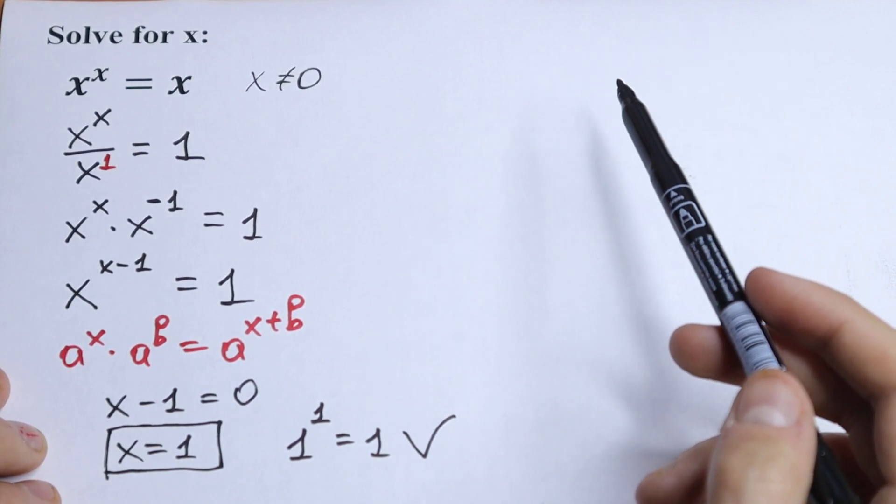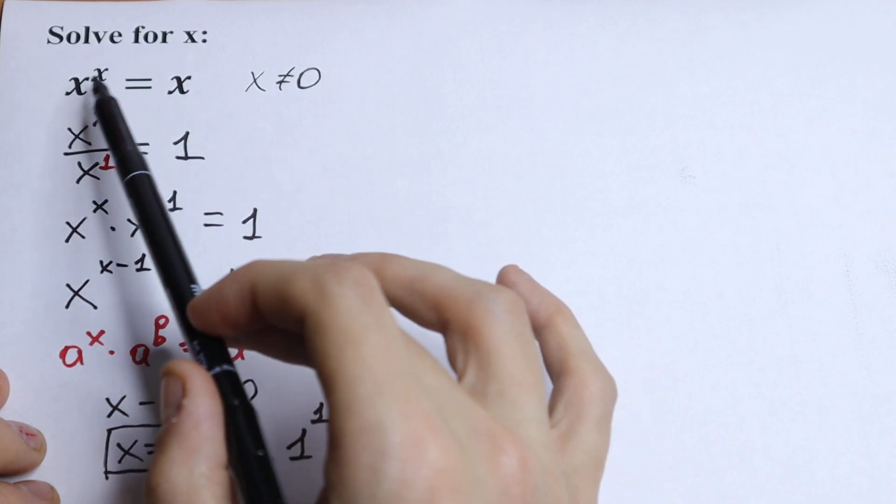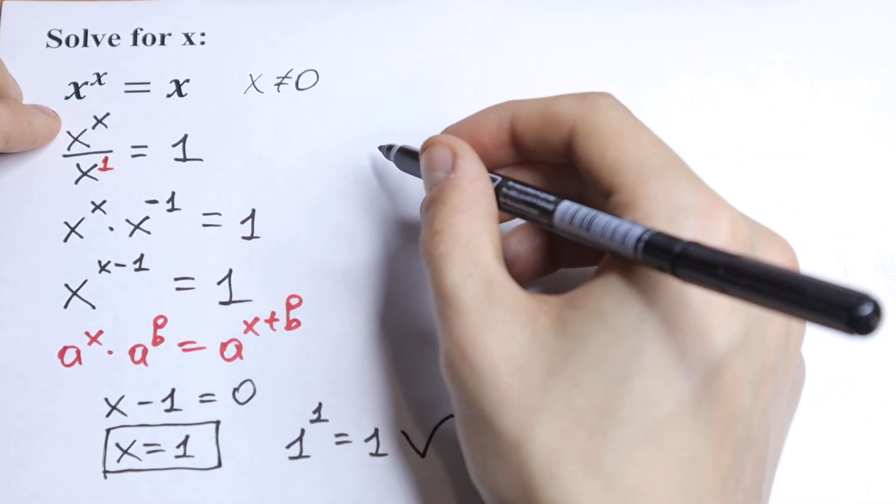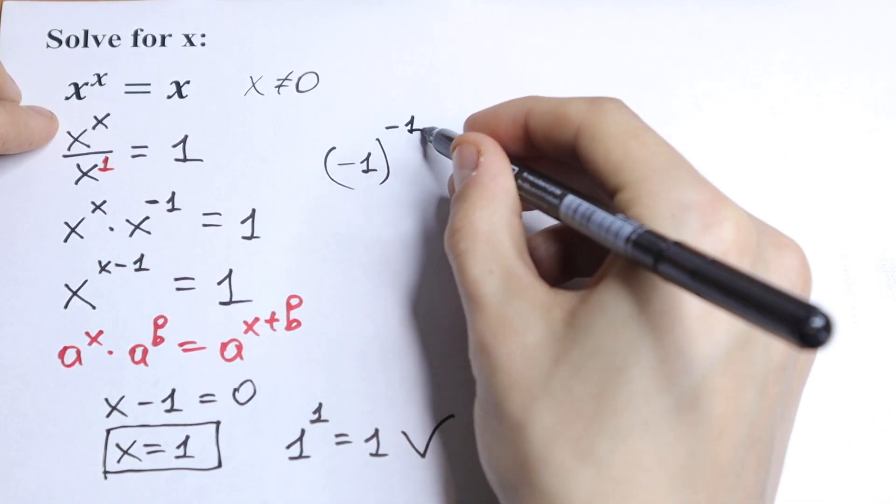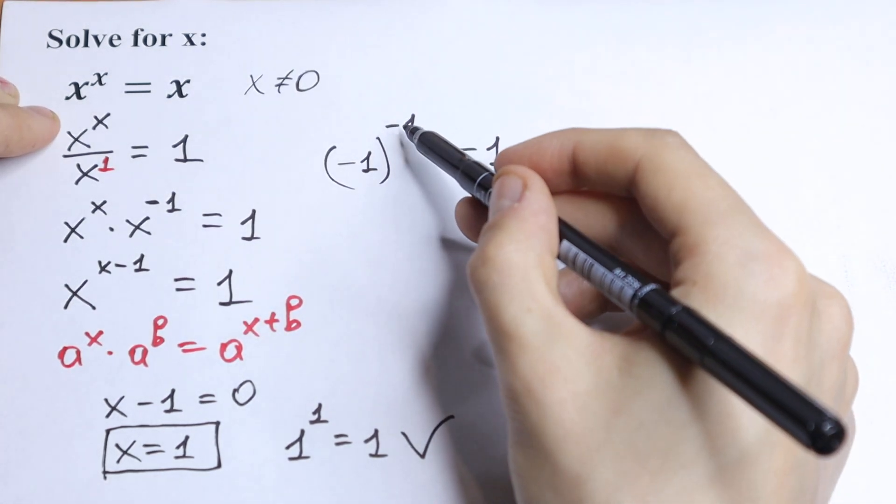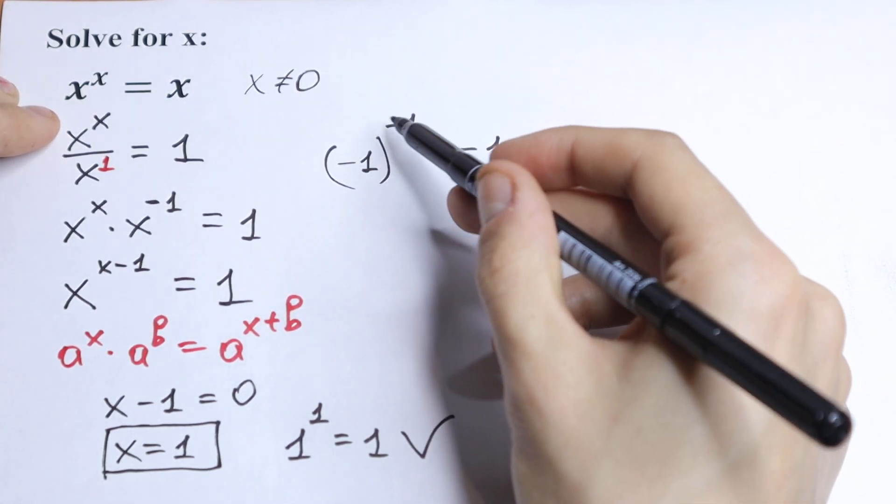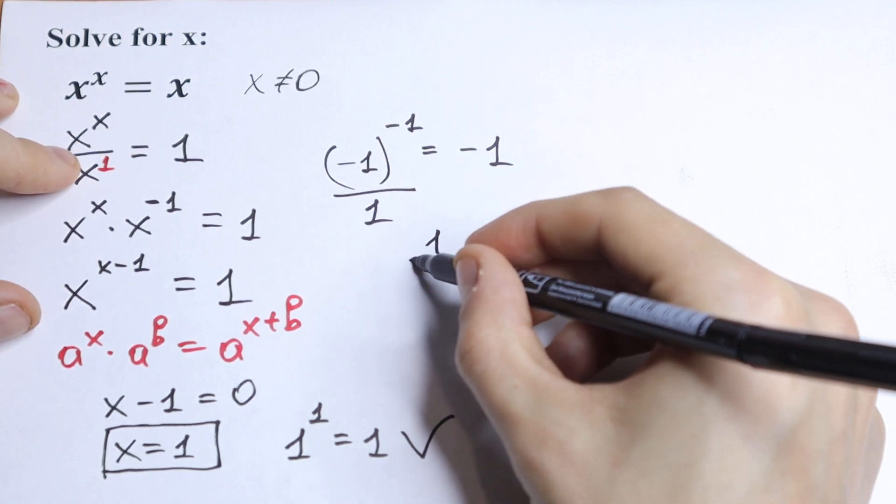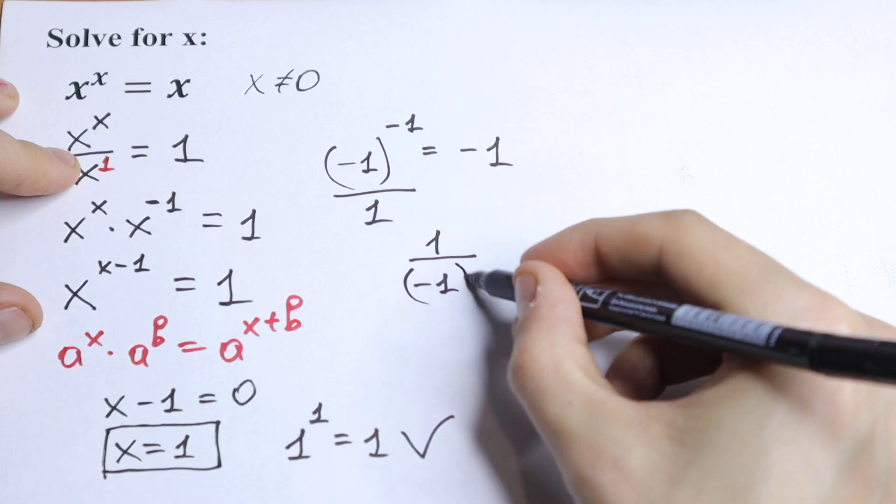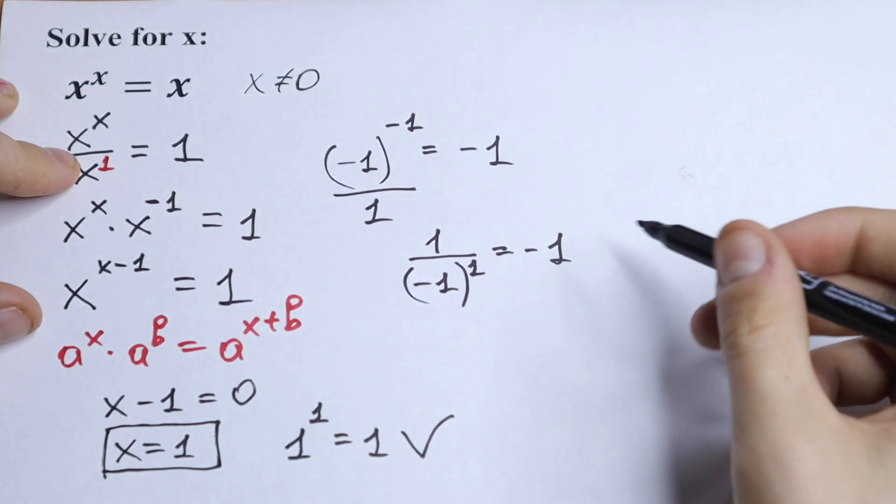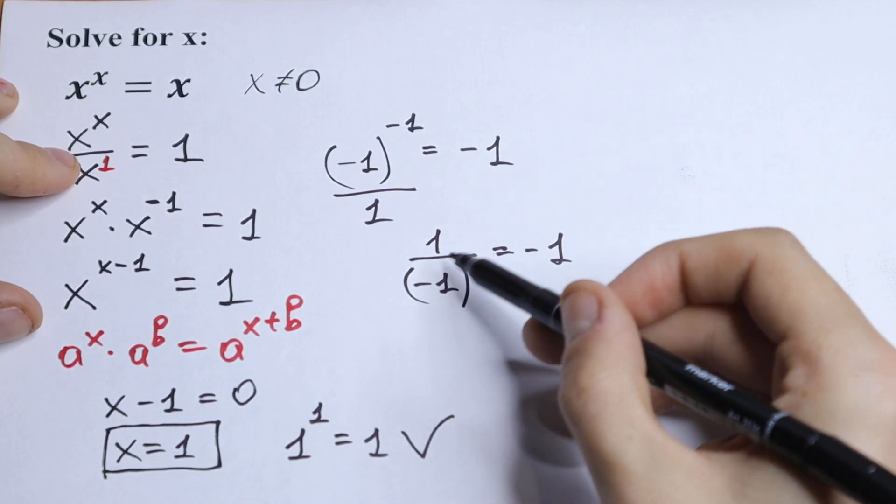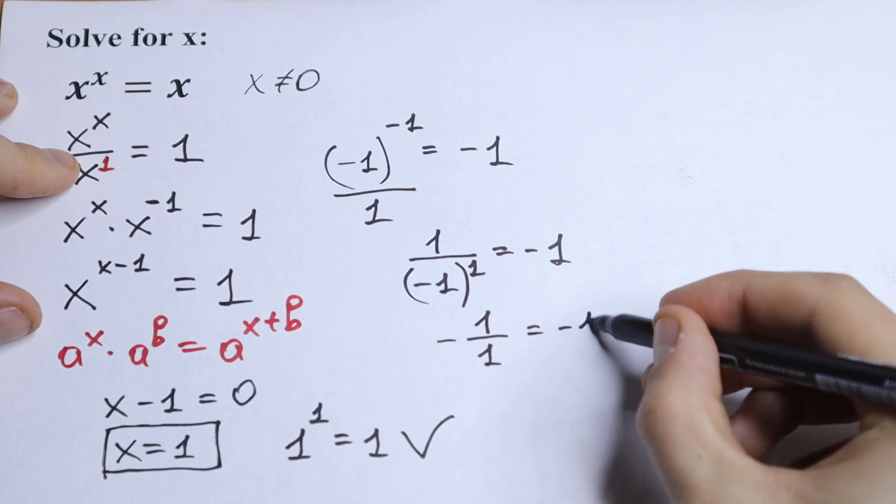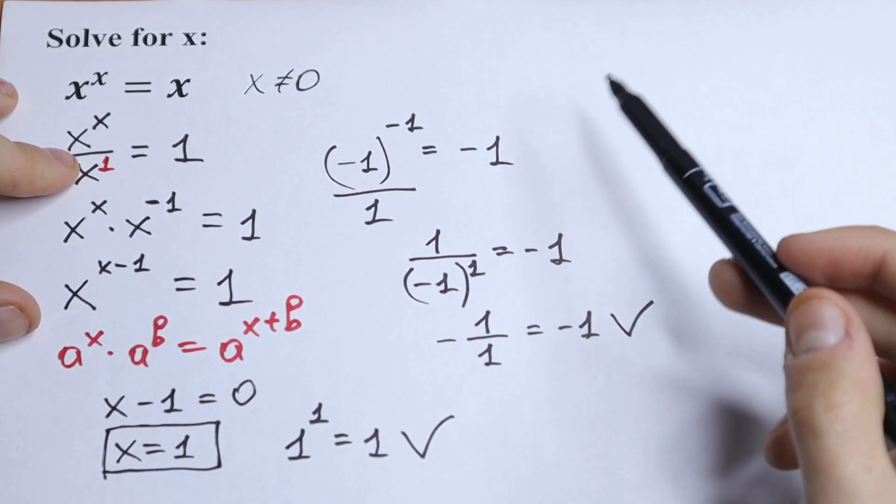But take a look. We can put right here minus one. Let's check minus one because I feel this root will be good for us as well. So we will have minus one to the power minus one equal to minus one. This minus one we can write in the denominator. We will have one over minus one to the power one equal to minus one. And it will be correct. So right here, minus one to the power minus one equals minus one times one equals minus one, which is correct.